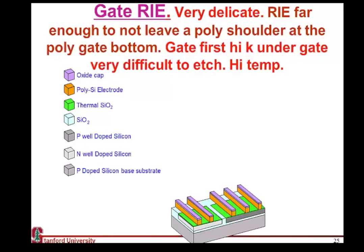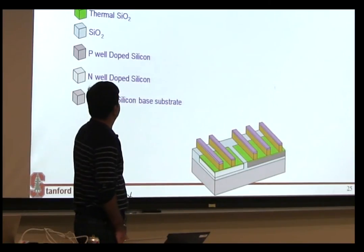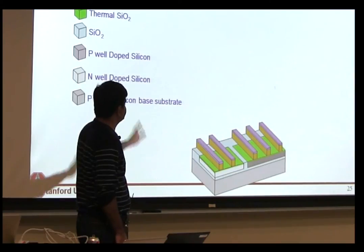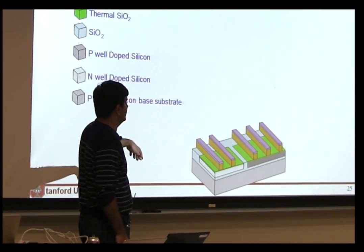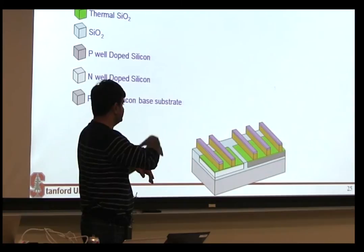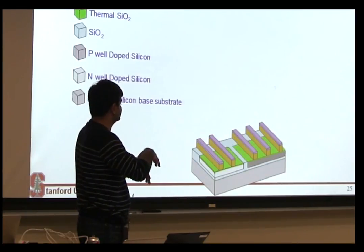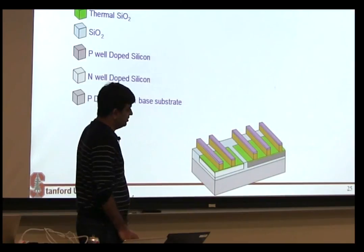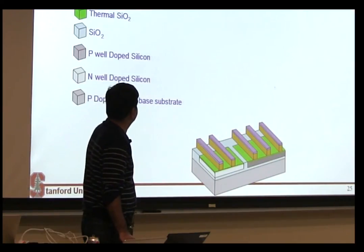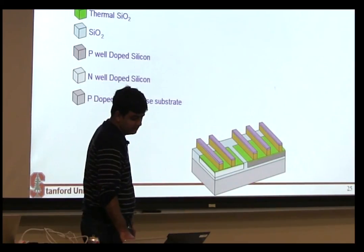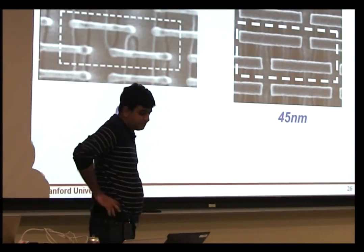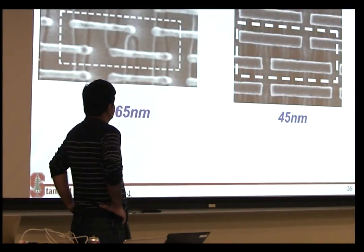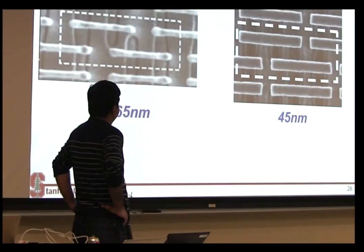And this is typically the most critical etch that happens in the entire process flow because it's at the very finest feature. At the same time, you're etching a poly region and stopping on a dielectric. And whenever you're etching, it's very difficult to stop on a dielectric, especially if it's like a one nanometer thin dielectric. So anyway, if you do this etch and you get it right, then you have achieved an accomplishment which is worth taking a picture.